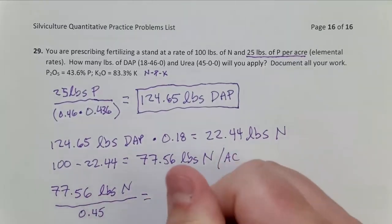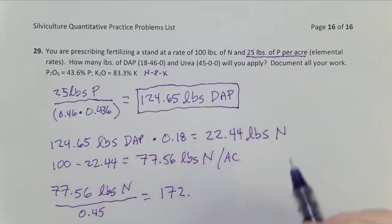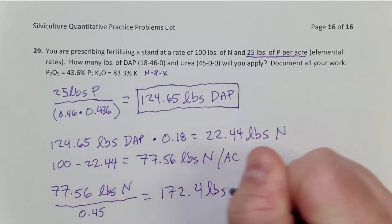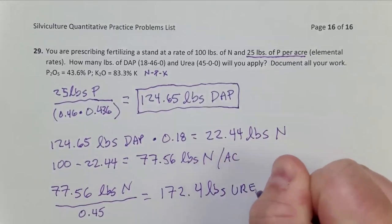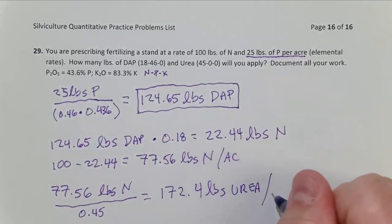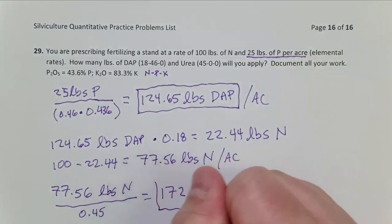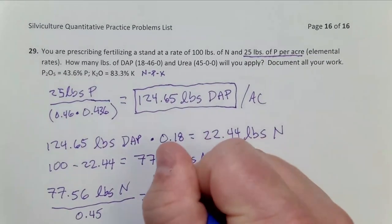And that tells me I need 172.4, it looks like, pounds, urea. That's on a per acre basis, and that should be on a per acre basis as well. So there's the second part of my solution here.